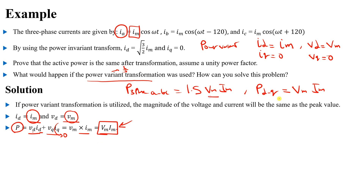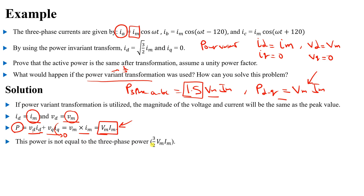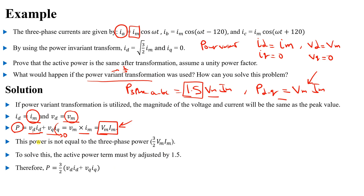Since the two powers are not equal, we need to solve this. When using the power variant transformation, we multiply the active power term from the dq frame by 1.5 or 3/2 to obtain the correct three-phase active power. The corrected equation for the power variant transformation becomes P = (3/2) × (Vd·Id + Vq·Iq).